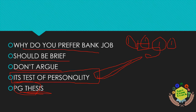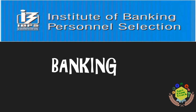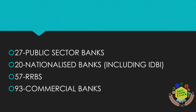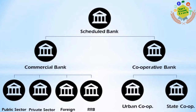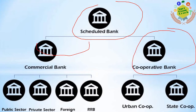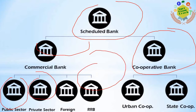Now the second topic is banking. I have covered almost everything that can be asked for agriculture students. There are 27 public sector banks, 20 nationalized banks including IDBI, and 57 RRB banks. We are more focused on RRBs since we are from agriculture. There are 93 commercial banks in total. Scheduled banks are divided into commercial banks and cooperative banks.